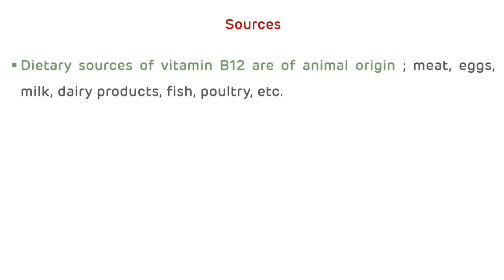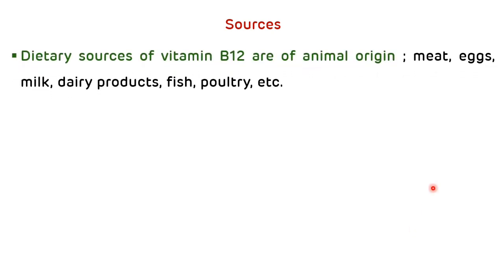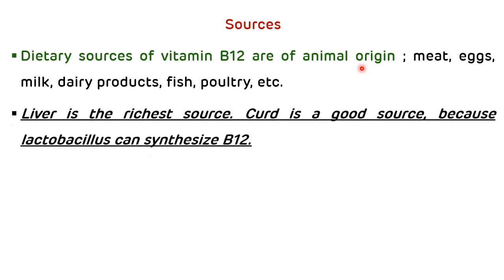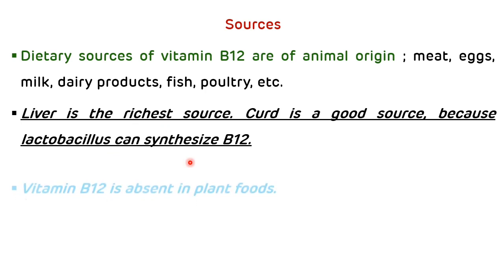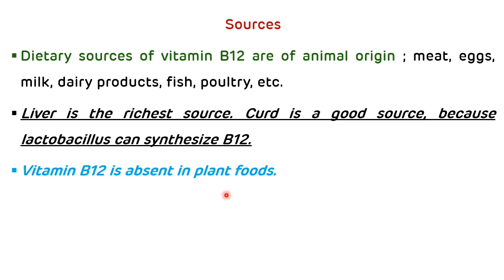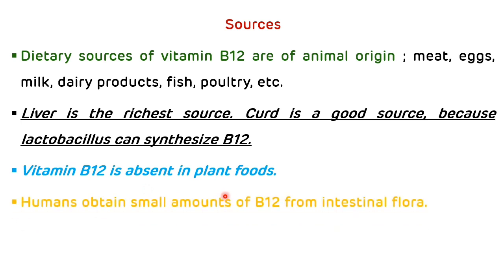Dietary sources of vitamin B12 are of animal origin like meat, eggs, milk, dairy products, and fish. Liver is the richest source, and curd is also a good source because Lactobacillus can synthesize vitamin B12. Vitamin B12 is absent in plant foods, and humans obtain small amounts of vitamin B12 from the intestinal flora. Other vitamins that can be synthesized from intestinal flora are vitamin K and riboflavin.